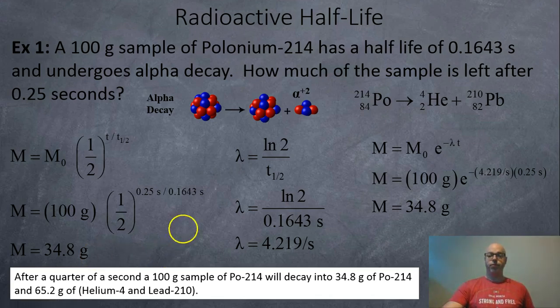If you'd rather use the decay constant, it's just ln 2 divided by the half-life 0.1643, and you're going to get 4.2919 per seconds. You plug that into the equation with the e, negative 4.219 per seconds times 0.25 seconds, and you get the same answer. So if you like to use the decay constant or the half-life doesn't matter, you'll get the same answer.